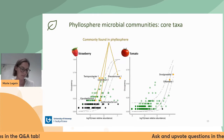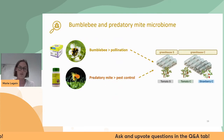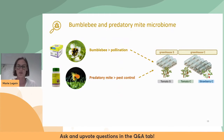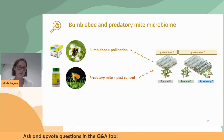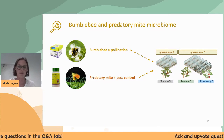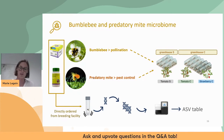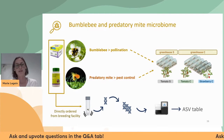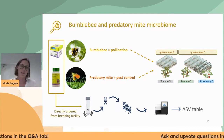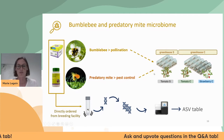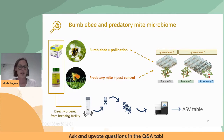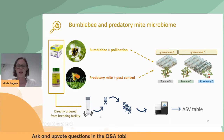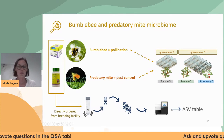We started wondering whether bumblebees introduced these taxa into greenhouses. To confirm this, we sampled bumblebees and predatory mites ordered directly from the breeding facility — so these arthropods had not come into contact with the plants. However, the plants we sampled had come into contact with bumblebees and predatory mites from the same breeding facility. We sequenced their contact microbiome — the microbiome released after washing.